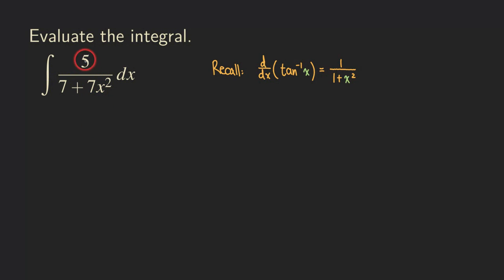First, we don't really need the 5 in the numerator, because in this form, the numerator is a 1. If we can turn this 5 into a 1, then we're one step forward in turning this form into that form. How do we turn the 5 into a 1? The easiest way is to bring the 5 outside the integral, because that's just a constant being multiplied to the function. So first step, we bring the 5 outside. It becomes 5 times the integral of 1 over 7 plus 7x squared dx.